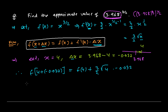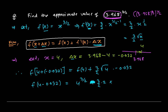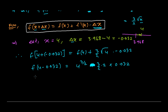This becomes 4 − 0.032 on the left, which equals 3.968 as expected. On the right side, f(4) = 4 to the power 3/2, and (3/2)·√4 = (3/2)·2. Writing it as minus: (3/2)·2·0.032. We already calculated 4 − 0.032 = 3.968, confirming our setup.